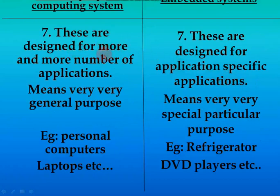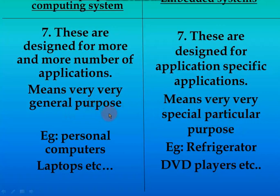General purpose computing systems are designed for a large number of applications — very commonly used for all general purposes. Embedded systems are application specific — designed for particular, specific applications only. Examples of general purpose computing systems include personal computers and laptops. Examples of embedded systems include refrigerators and DVD players.